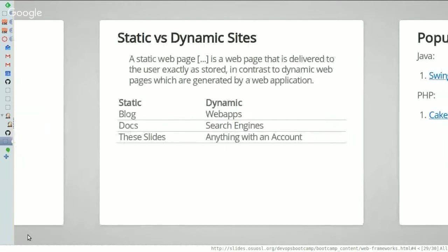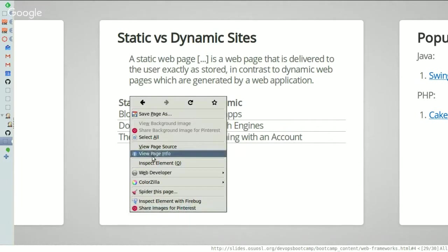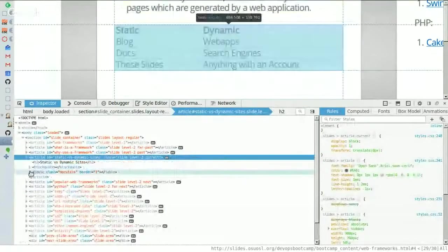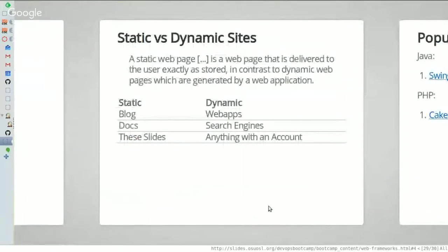Speaking of static pages, let's talk about static versus dynamic websites. Wikipedia defines the difference as: a static web page is a web page that is delivered to the user exactly as it is stored. In contrast, a dynamic web page is generated by a web application. Examples of static sites include blogs, documentation, and even these slides — fun fact, these slides are actually just HTML in the browser. A dynamic website would be a web app like Facebook or Twitter, or even just some small app you made for a friend's birthday, or a search engine.